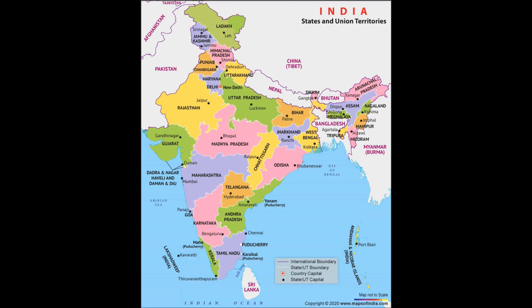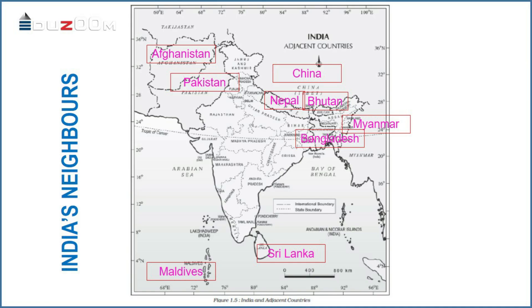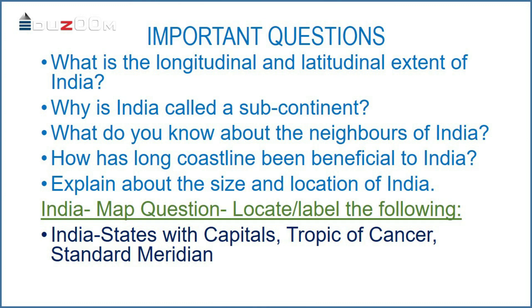India occupies an important strategic position in South Asia. India has 29 states and 7 union territories, and New Delhi is the capital territory. India shares its land boundaries with Pakistan and Afghanistan in the north-west, China in the north, Nepal and Bhutan in the north-east, and Myanmar and Bangladesh in the east. The southern neighbors across the sea are two island countries — Sri Lanka and Maldives. India has strong geographical and historical links with these neighboring countries.